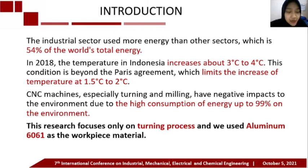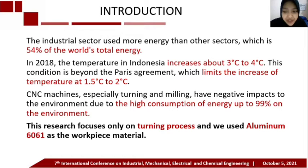Machines commonly used in manufacturing are CNC machines. CNC machines, especially turning and milling, have negative impacts on the environment due to high energy consumption — up to 99% impact on the environment. This research focuses only on the turning process, using aluminum 6061 as the workpiece material, which is the most frequently used material for turning processes.